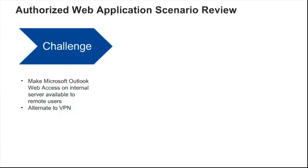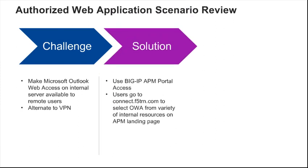In this scenario, the fictional company needs to make Microsoft Outlook Web Access on an internal server available to remote users that may not have access to the VPN. The solution is to use BigIP APM portal access and have users go to the existing virtual server and select OWA from the landing page.